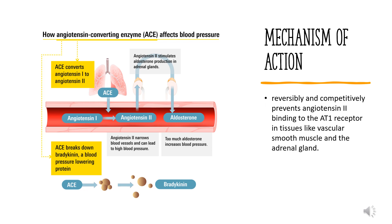Mechanism of Action: Valsartan belongs to the angiotensin-2 receptor blocker, ARB, family of drugs, which selectively bind to angiotensin receptor 1 (AT1) and prevent angiotensin-2 from binding and exerting its hypertensive effects. These include vasoconstriction, stimulation and synthesis of aldosterone and ADH, cardiac stimulation, and renal reabsorption of sodium, among others. Overall, Valsartan's physiologic effects lead to reduced blood pressure, lower aldosterone levels, reduced cardiac activity, and increased excretion of sodium.